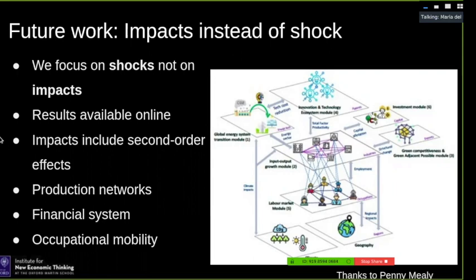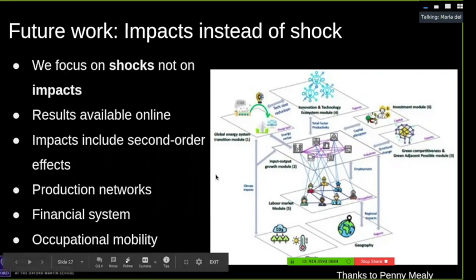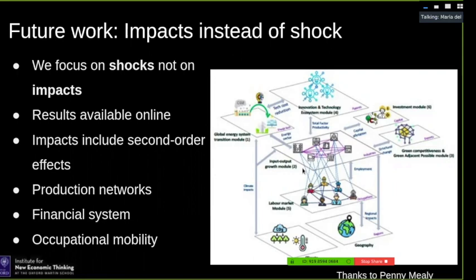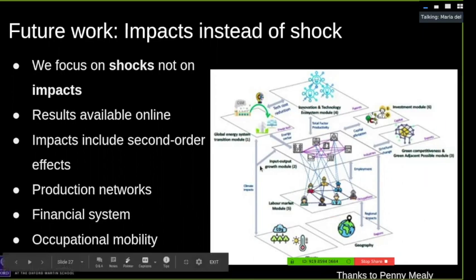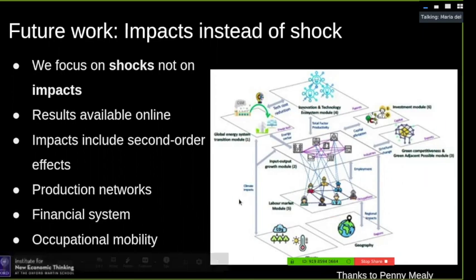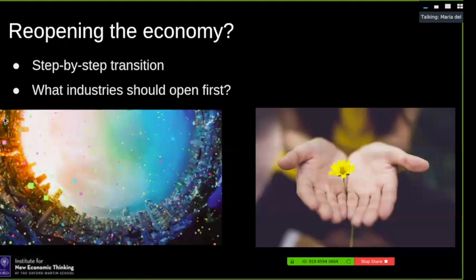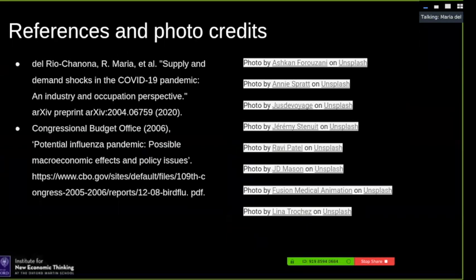Going forward, we are interested in studying sectoral and network effects, production networks, the financial system, and occupational mobility. The overall picture would couple the labor market, the input-output or supply chain network, the financial system, and innovation dynamics. At the moment we are coupling the labor market and plan to do shock propagation in the input-output network. There is also the question of how to reopen the economy step by step — which industries should open first — and these are questions we would like to explore.